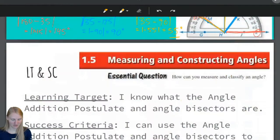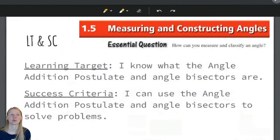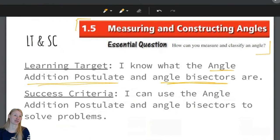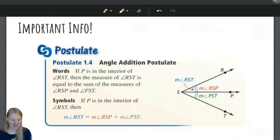That's the first half of 1.5. Part of the first half. We're going to move on to the second part of 1.5. The last part of 1.5. Still about angles. But now we are going to learn about the angle addition postulate and angle bisectors. Do you think an angle bisector is like a segment bisector? Think about that. So our learning target is that you know what these things are. And the success criteria is that you can use the angle addition postulate and angle bisectors to solve problems. So let's jump right into it.